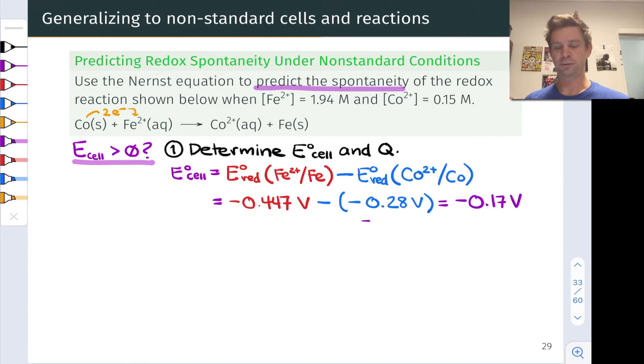Just to pause here a moment, the reason this came out negative is we're considering a hypothetical galvanic cell where we are forcing the redox reaction to proceed as written from left to right. The negative cell potential means, under standard conditions, this reaction would run backwards. Iron metal would reduce Co2+ to produce cobalt metal and Fe2+.